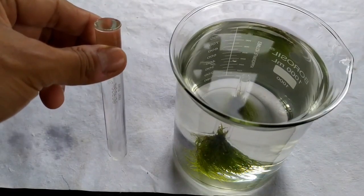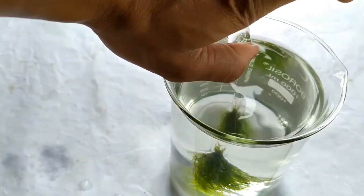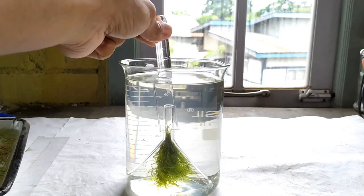Now, fill the test tube to the brim with water. Hold the mouth of the tube with your thumb and invert the tube into the beaker and let it sit over the tube of the funnel as shown in the video.